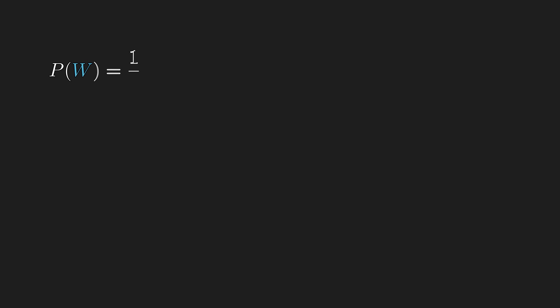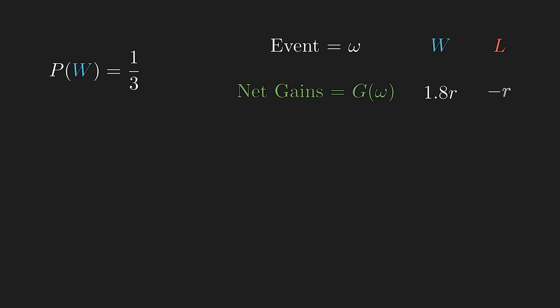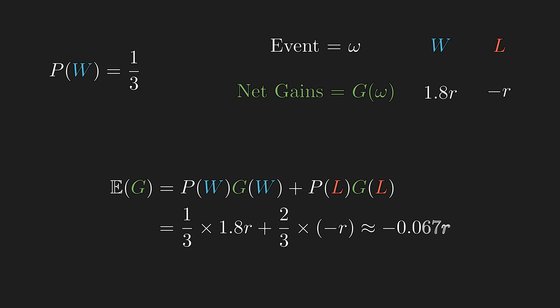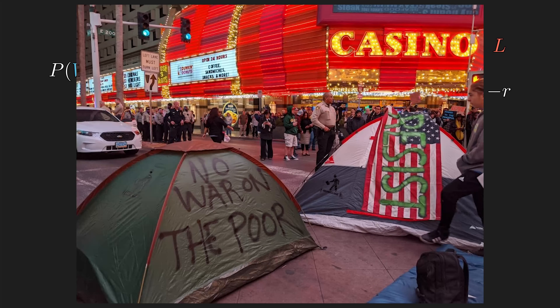Suppose there is a game with a probability of winning of 1/3, and if you win you get 1.8 times the amount of money you risk, and if you lose you lose the entire wager. We can calculate the expected value by summing over all possible events the probability times the payout, and it comes out to a negative value. You have no edge at all, so you will inevitably donate all your money to the house if you keep playing.